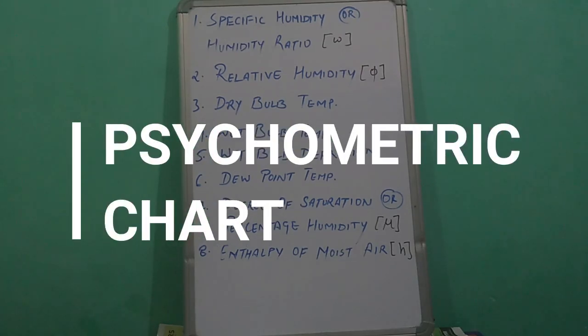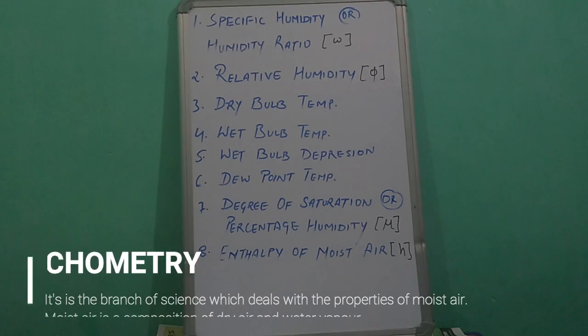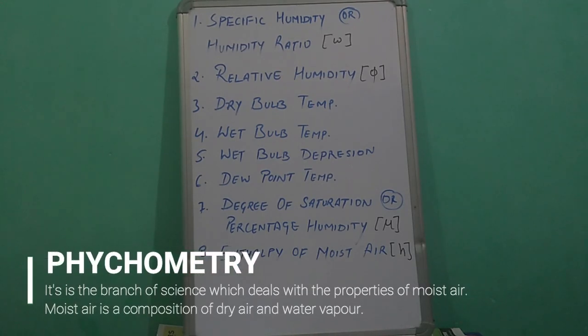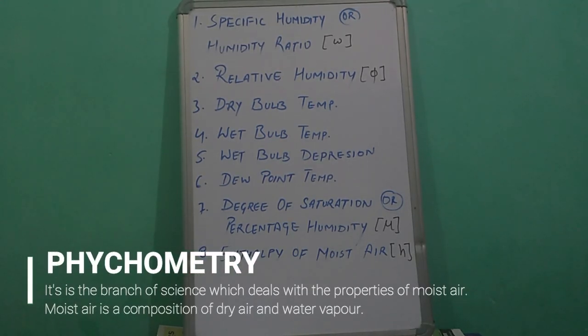What is psychrometry? Psychrometry is a branch of science which deals with the property of moist air. Moist air is a composition of dry air and water vapor.